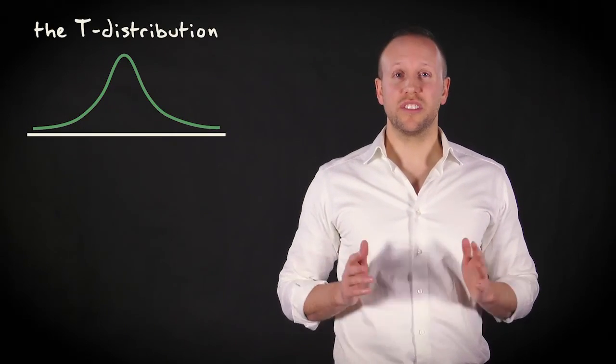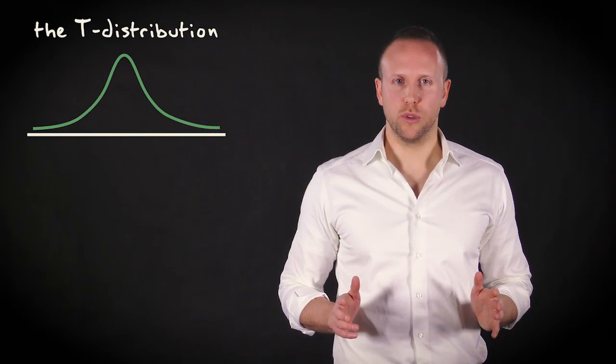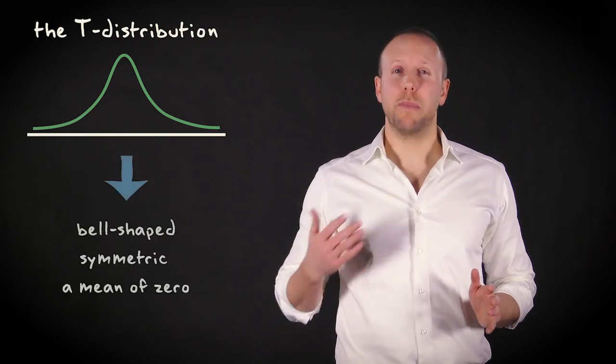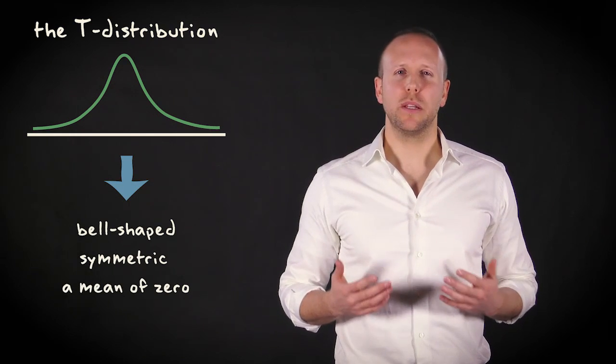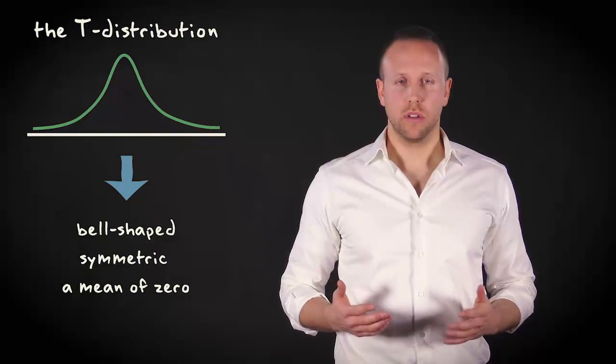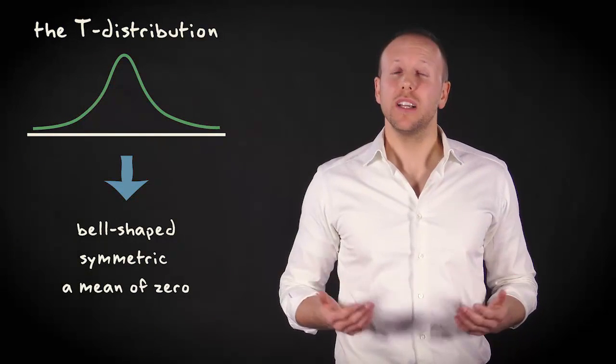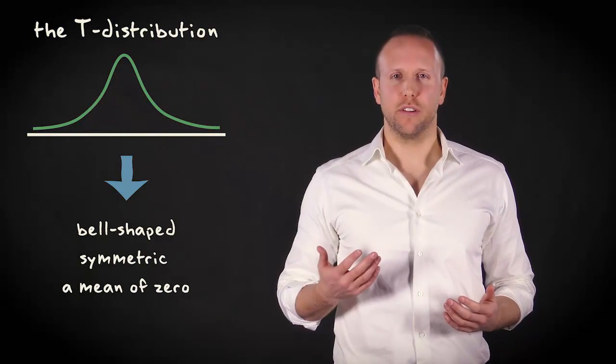Let me tell you a little more about t-distributions and t-scores. The t-distribution strongly resembles the standard normal distribution. It is bell-shaped, symmetric, and has a mean of zero. Still, however, it is slightly different.